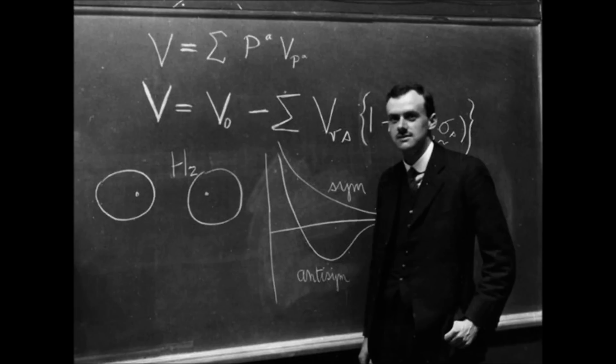If it is varying, then we have the problem of fitting in this varying G with our previous ideas of relativity. The ordinary Einstein theory demands that G shall be a constant. We have to modify it in a certain way. We don't want to abandon it altogether because it is so successful.